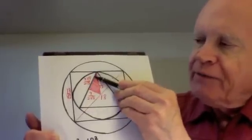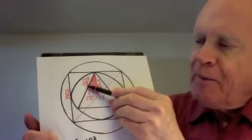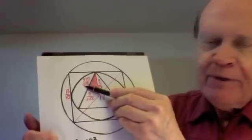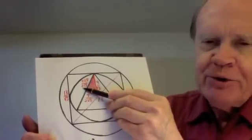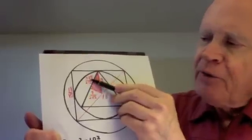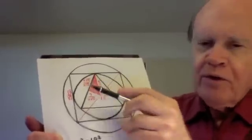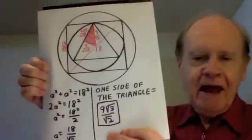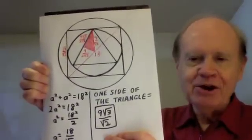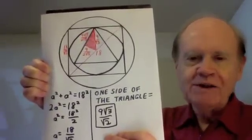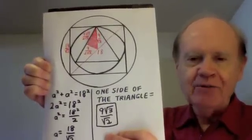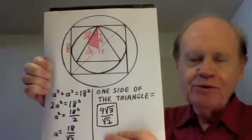So to get the full side of the triangle, we double it, which simply removes this denominator 2, giving us 9 root 3 over root 2. And so that is a good solution to the challenge. One side of the triangle equals 9 root 3 over root 2.